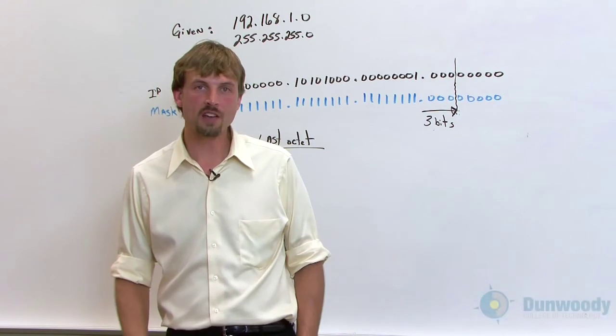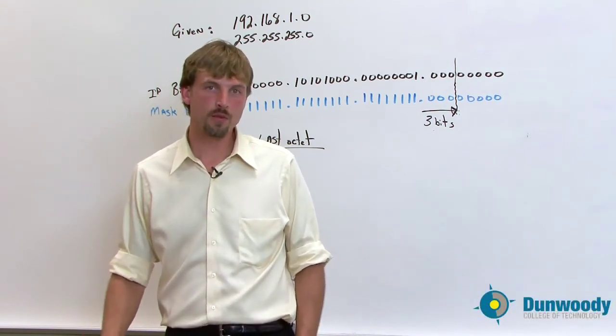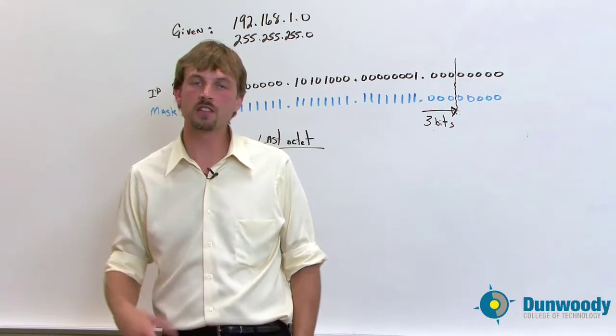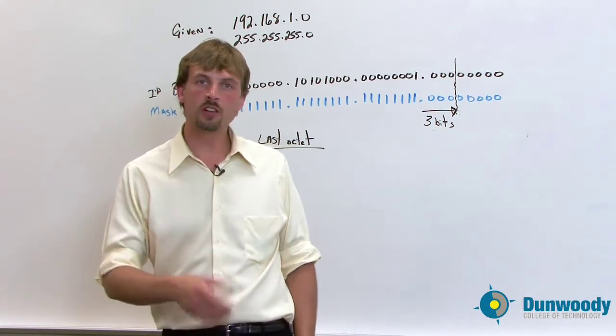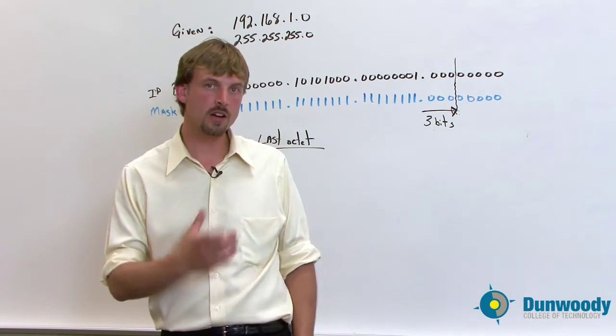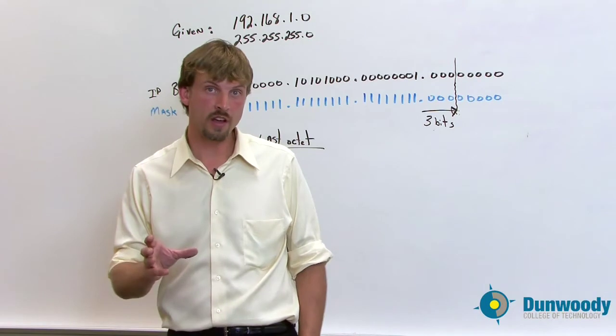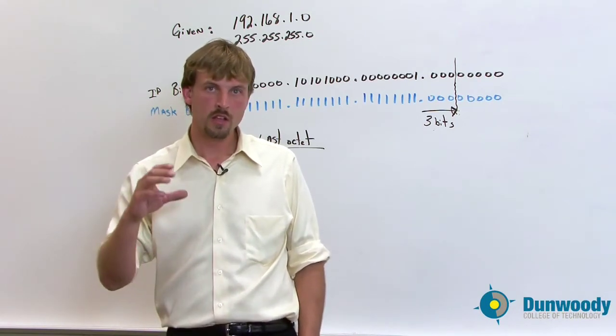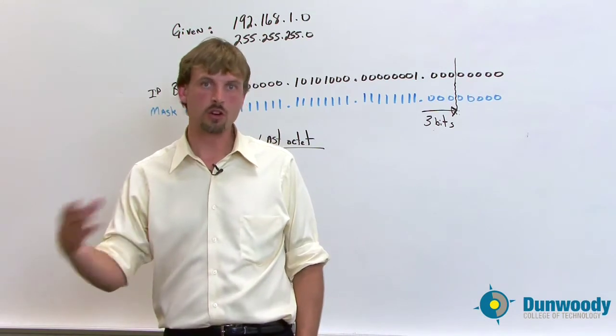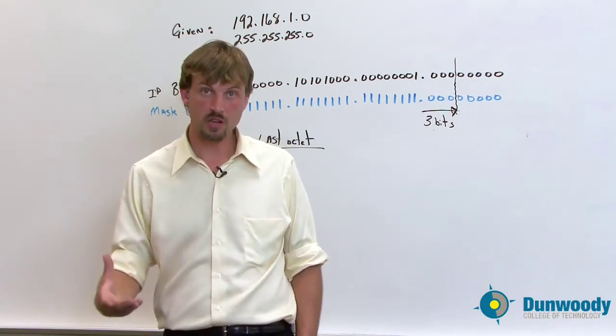We've been going through some IP address basics and subnetting in part one and part two. We're looking at part three here to finish off some of the ideas that we've started in those first two portions, and we're actually going to look at the binary process of figuring out where our logical networks start and end, and the ranges in all of the valid IP addresses that we could apply to a computer configuration in a network that has been subnetted.